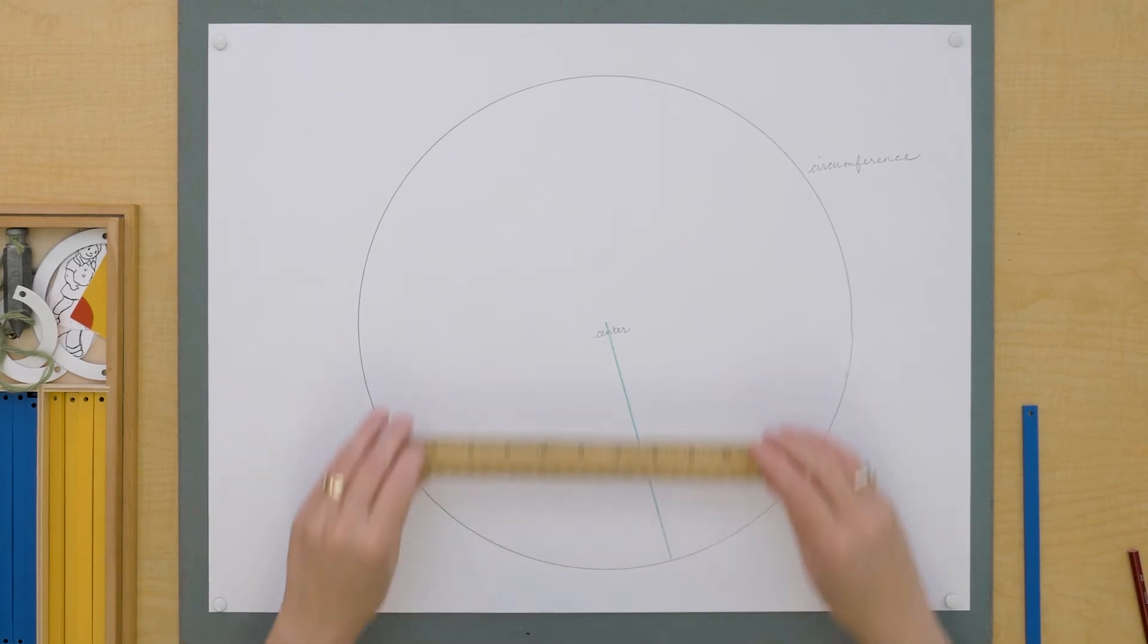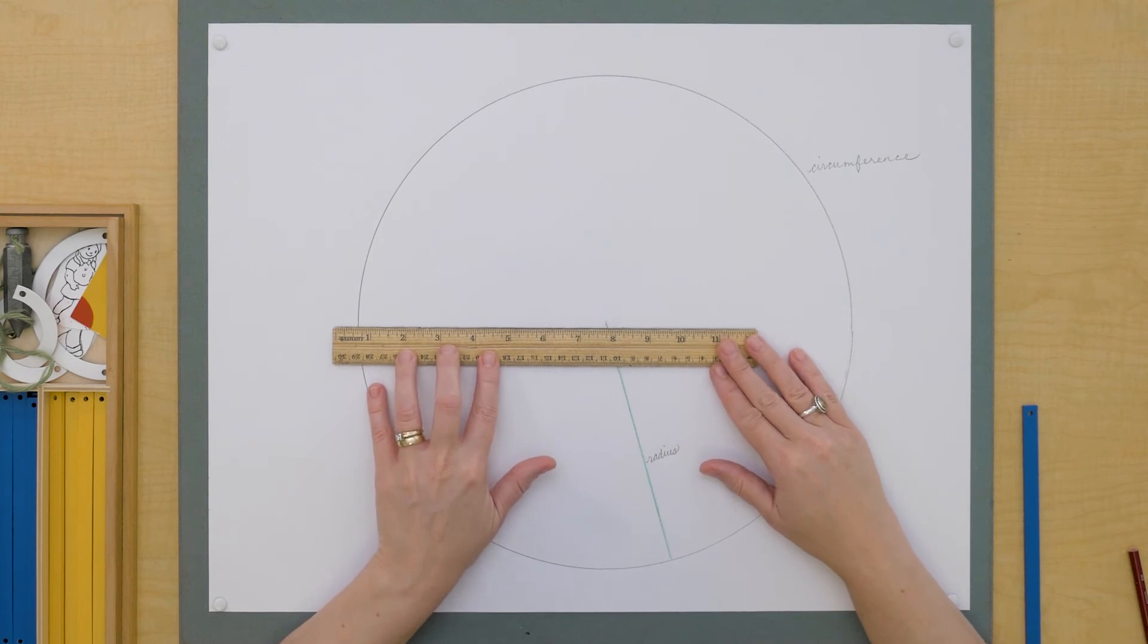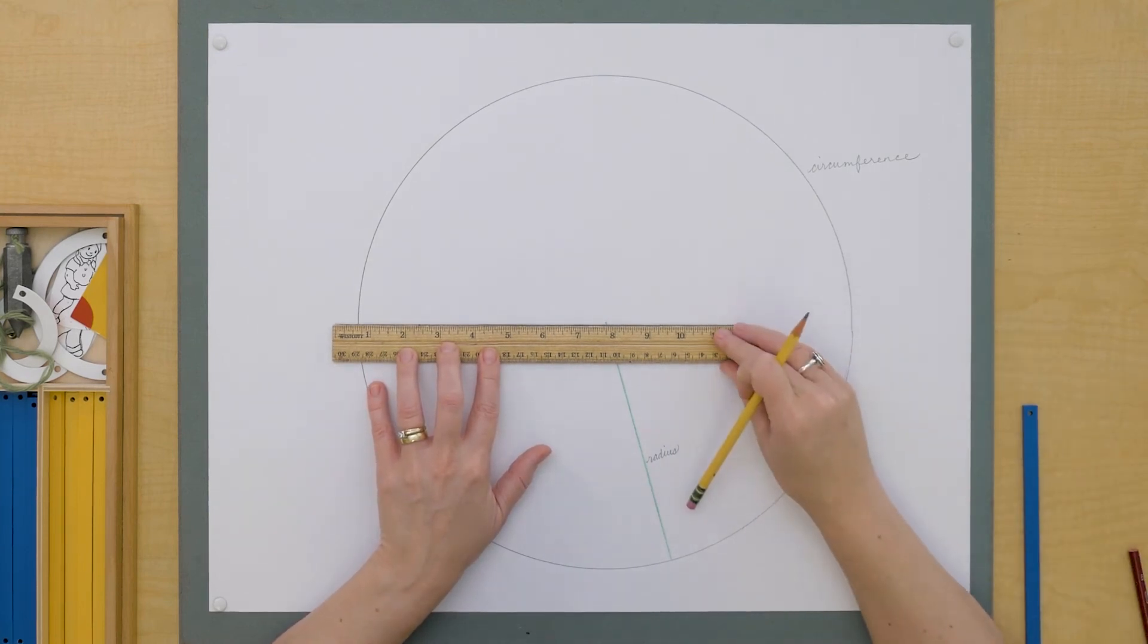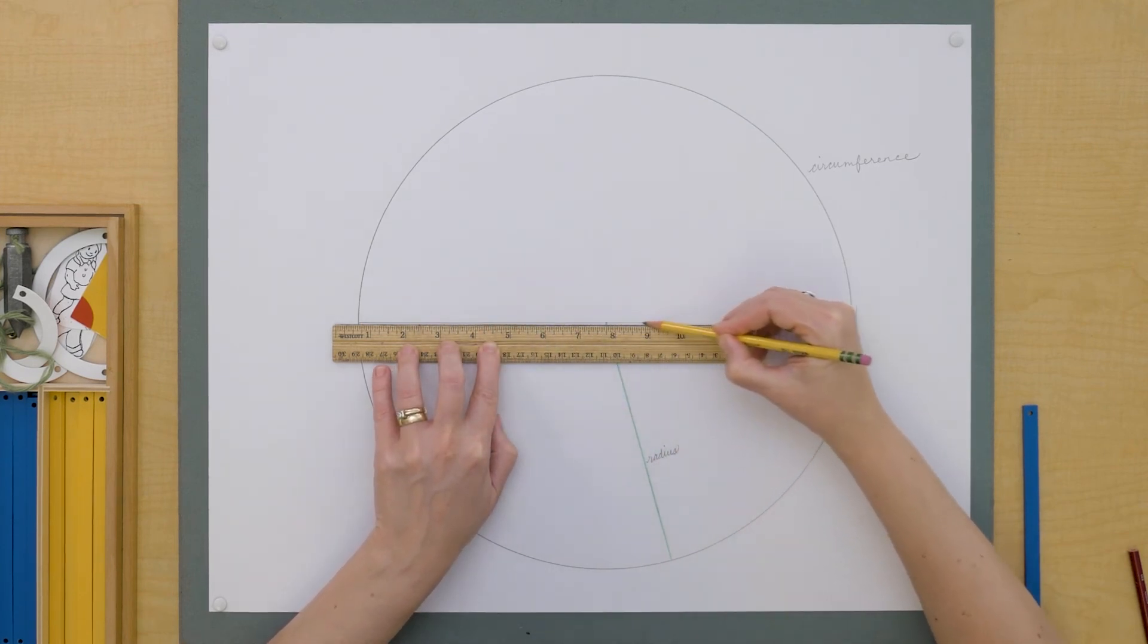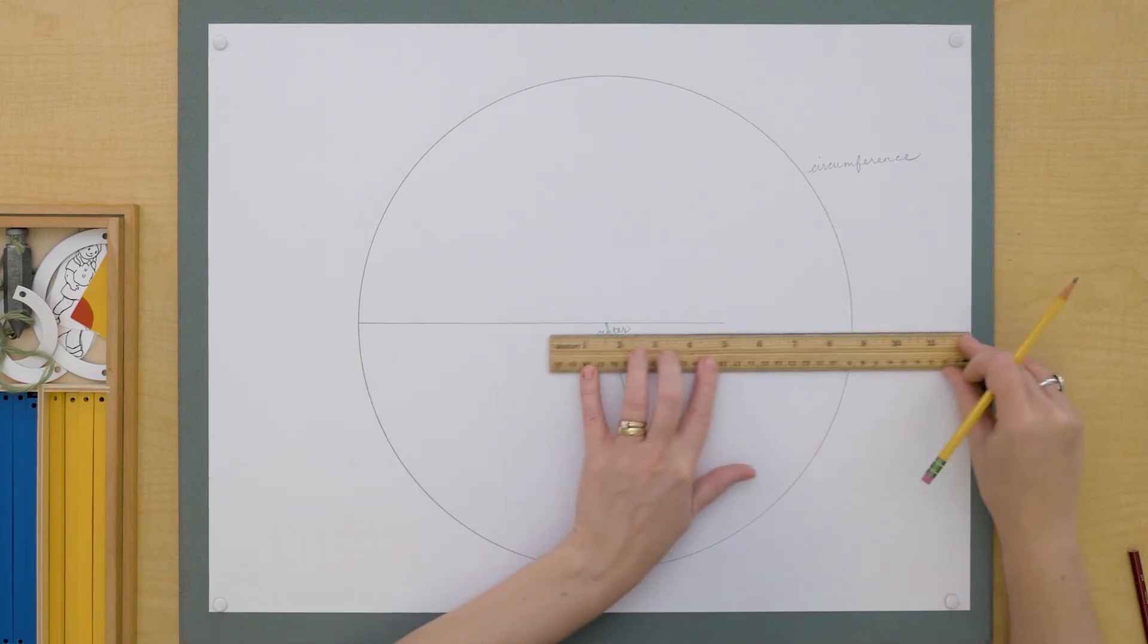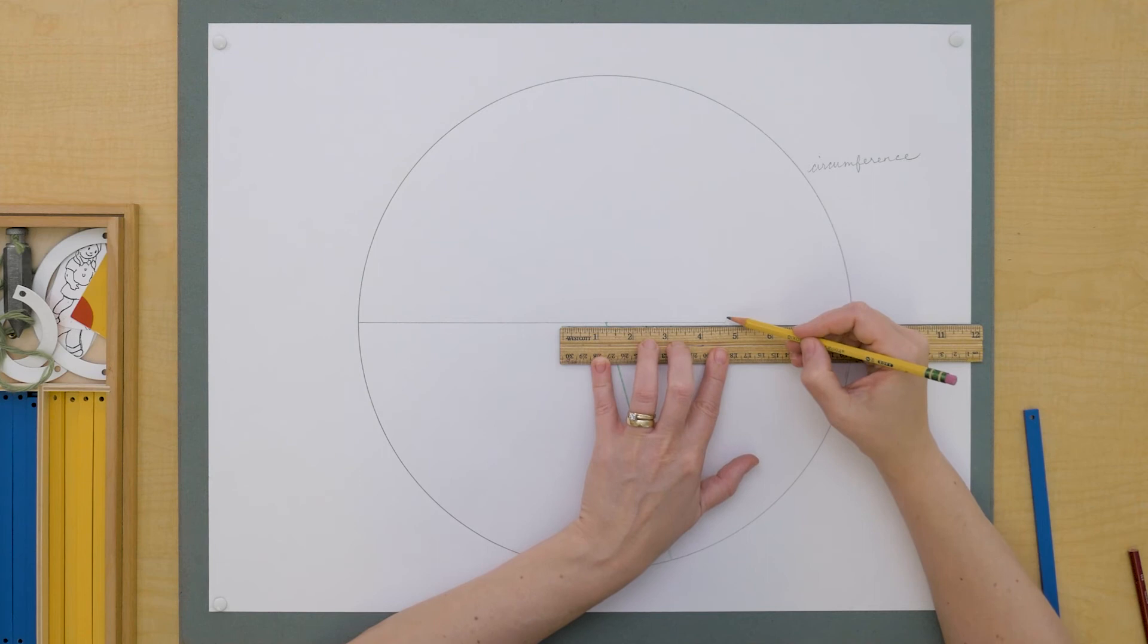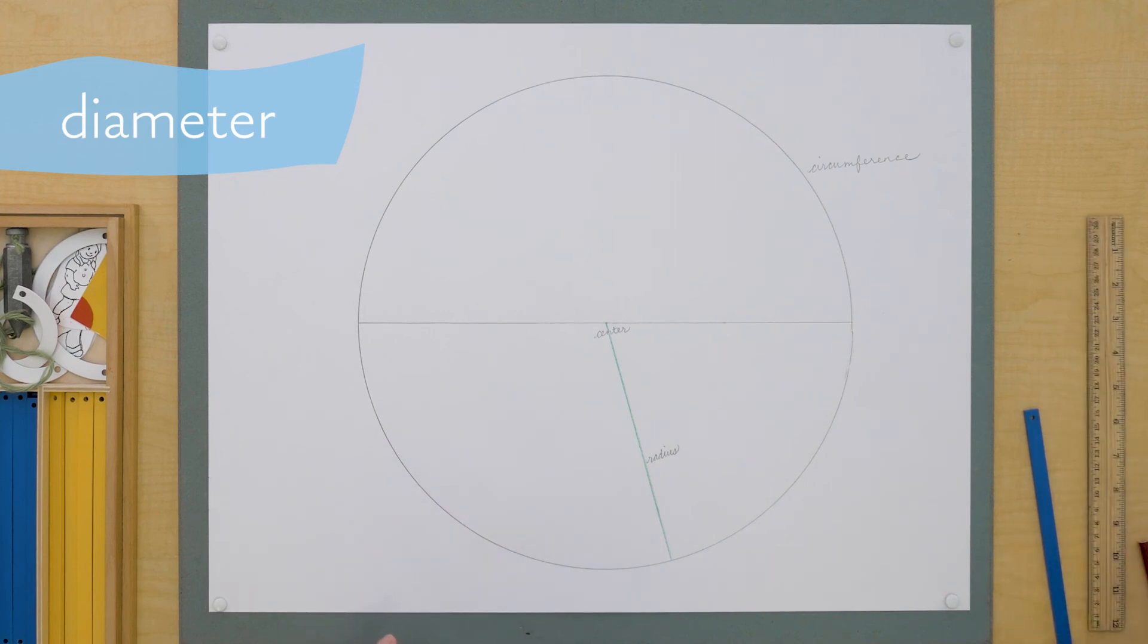Now, if I have a line segment that has both of its endpoints on the circumference and passes through the center, it's called the diameter. So this is a diameter.